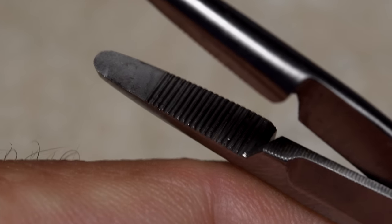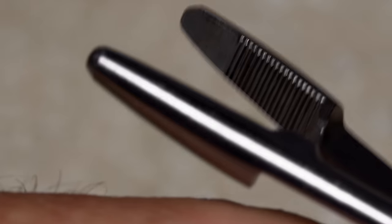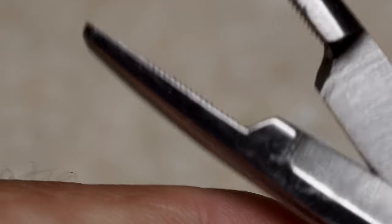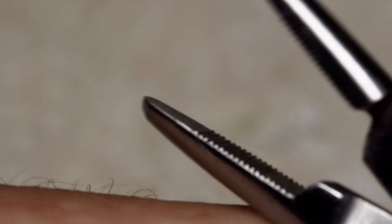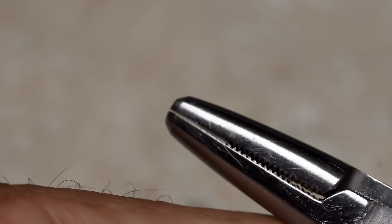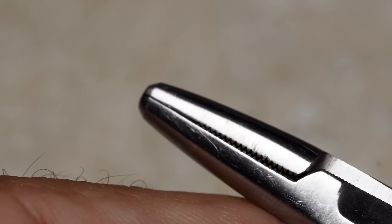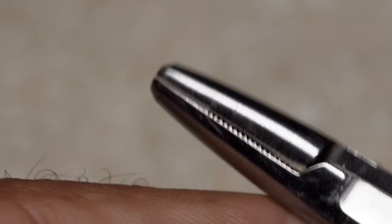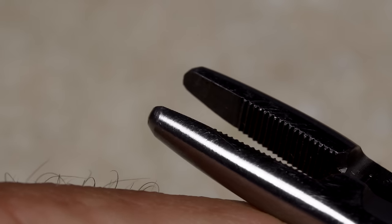The portion of the jaws with teeth hold even slippery materials super tight, while the flattened tips work great for more delicate jobs like mashing hook barbs. The tapered outer parts of the jaws also come in handy, particularly for tying a non-slip loop knot.